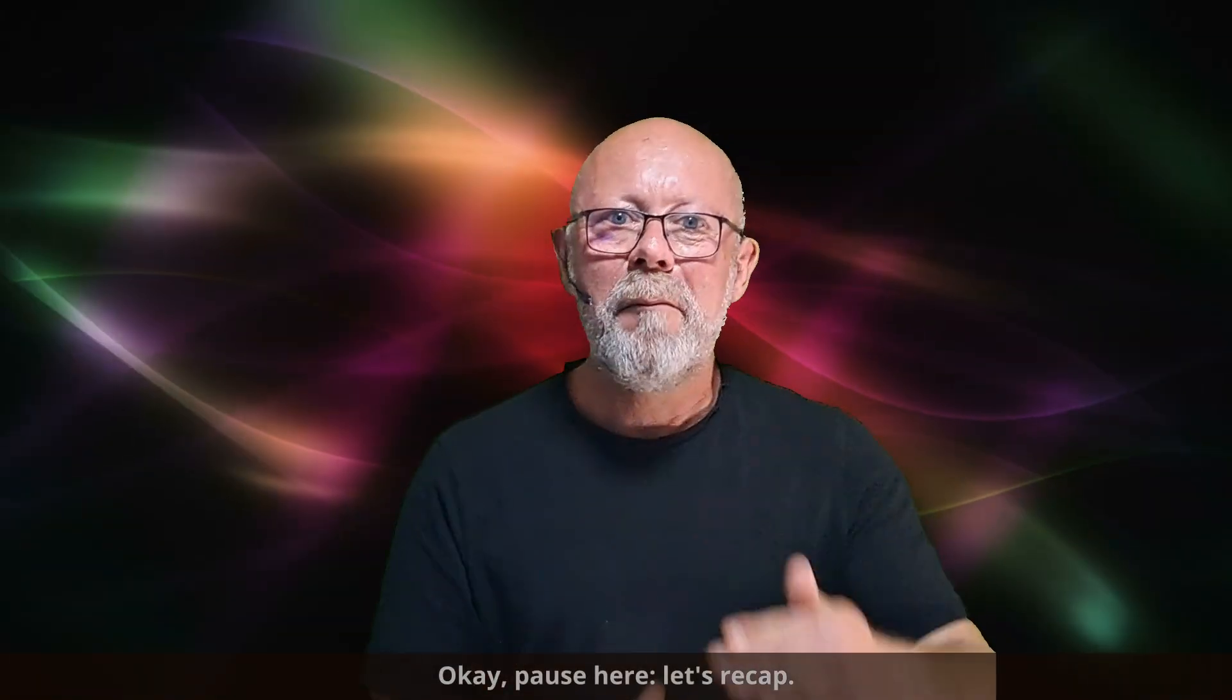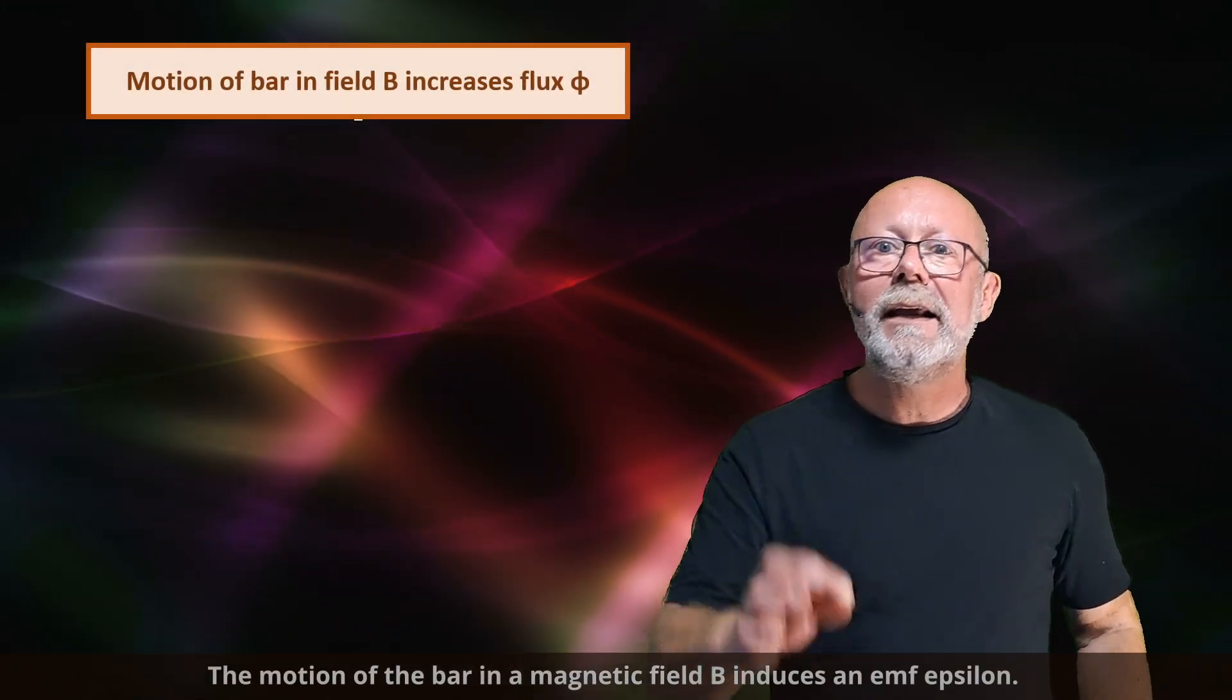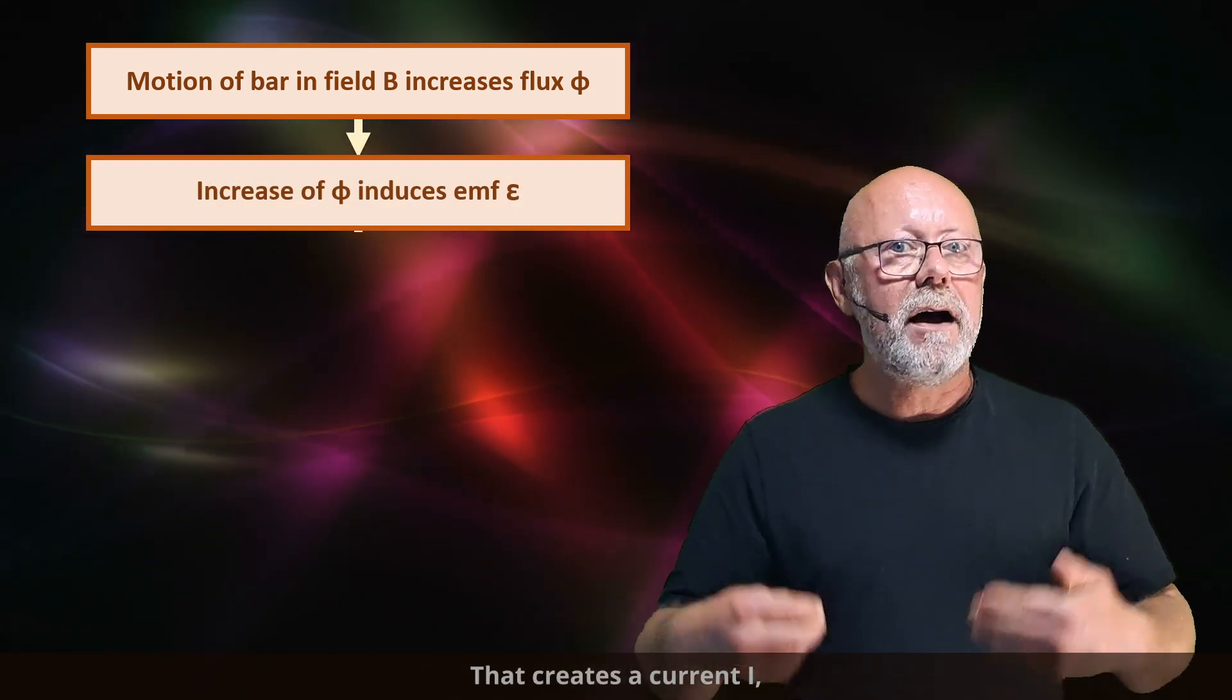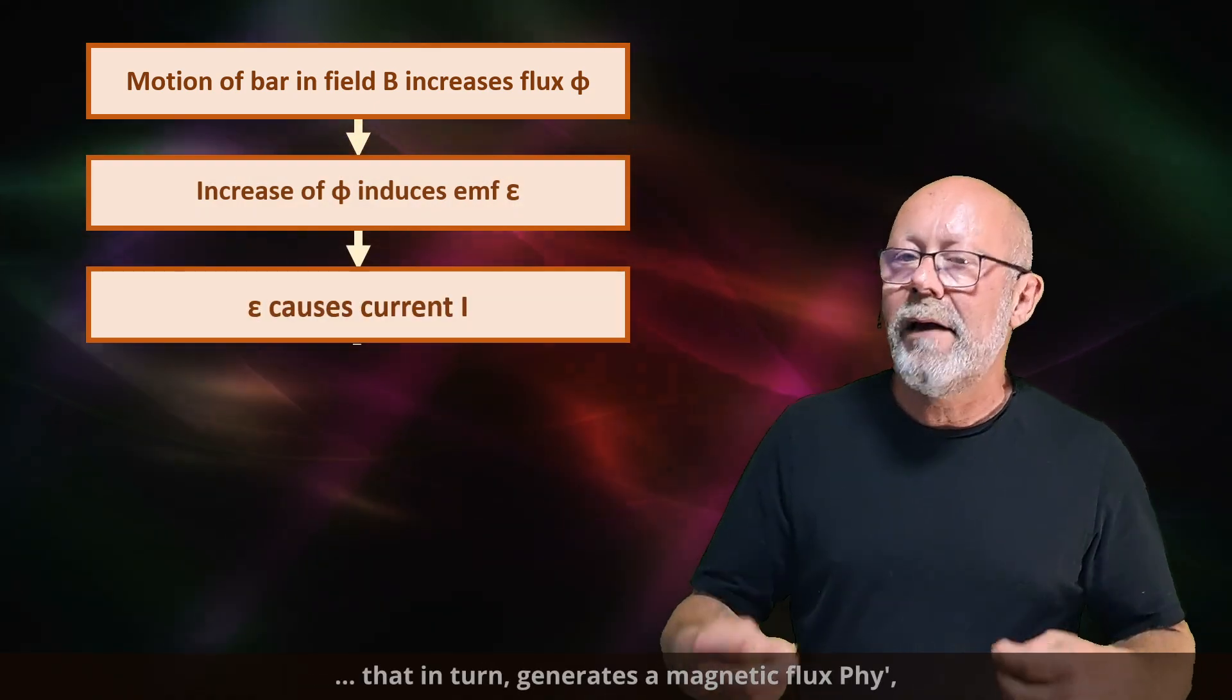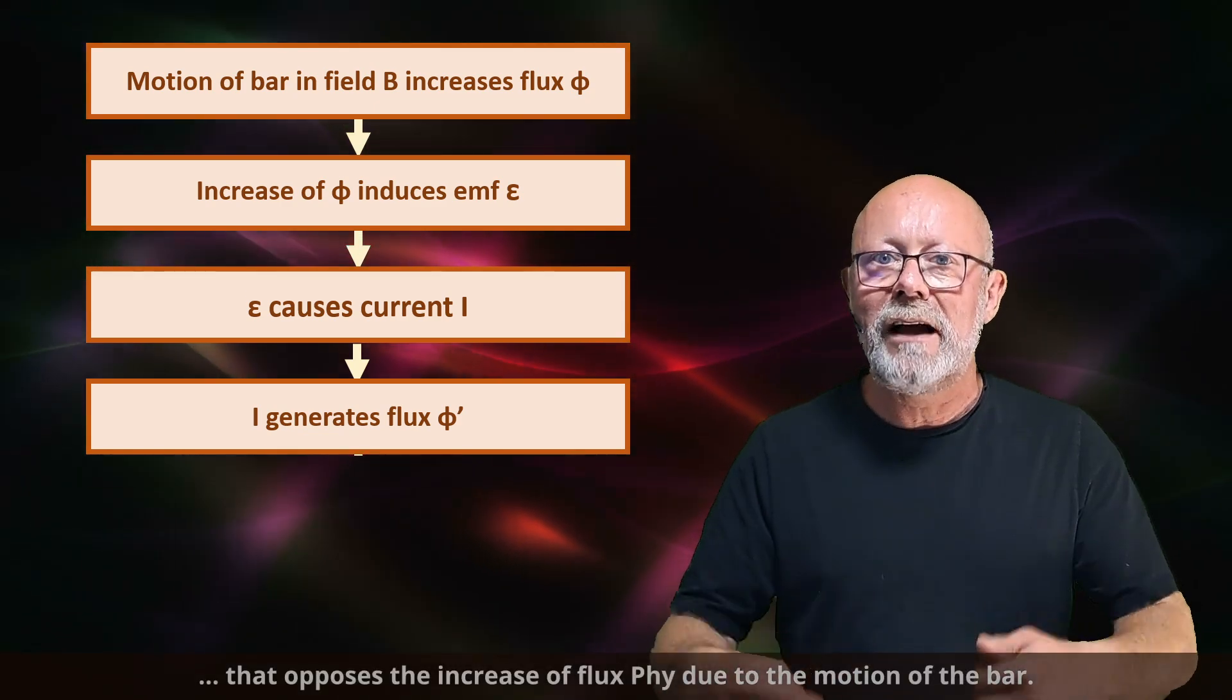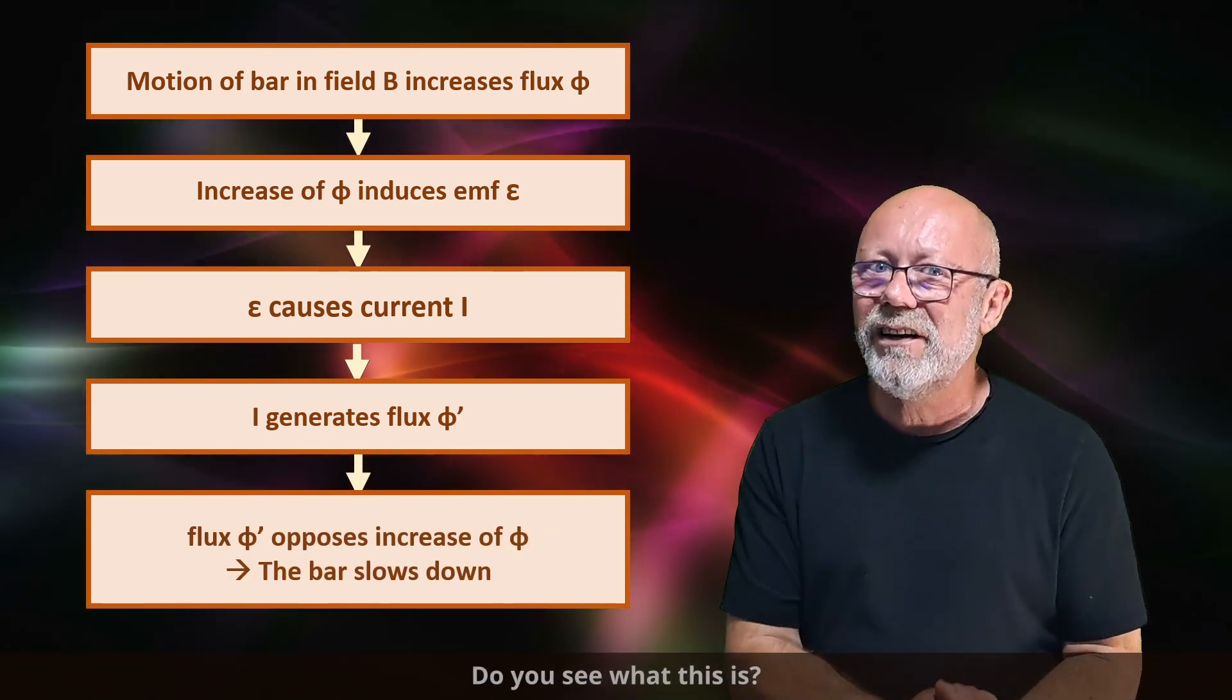Okay, pause here. Let's recap. The motion of the bar in a magnetic field B induces an EMF epsilon. That creates a current I, that in turn generates a magnetic flux phi' that opposes the increase of the flux phi due to the motion of the bar. Do you see what this is?